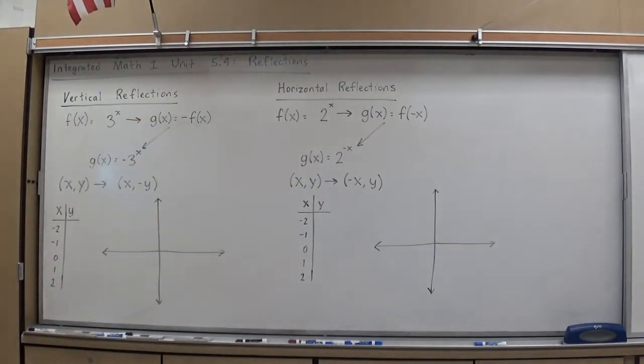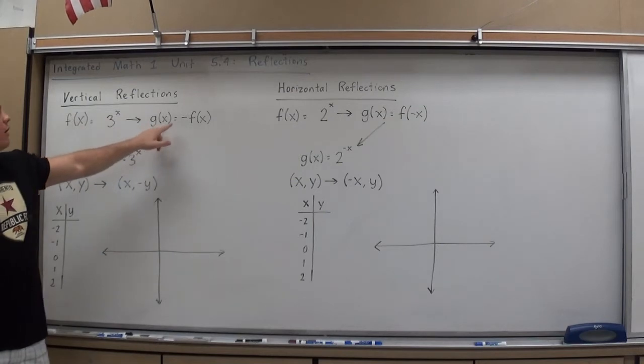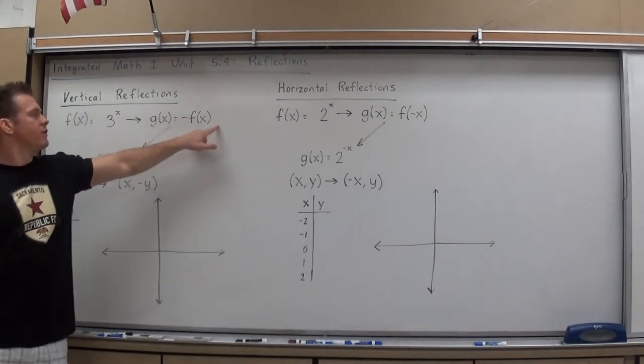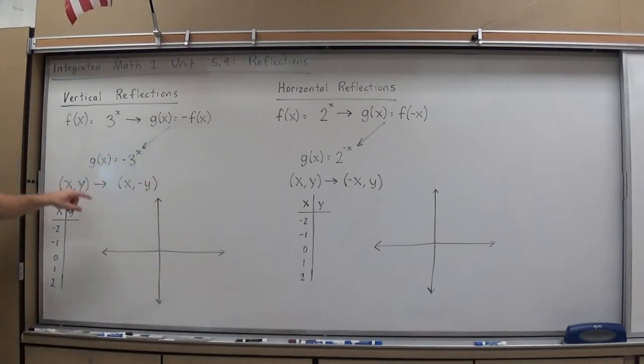To do a vertical reflection of an image, we would take the function, and in function notation, f of x equals 3 to the x, to make the reflection g of x, we basically just do a negative of the entire function. So we throw a negative out in front of the main function. For example, 3 to the x would become negative 3 to the x.